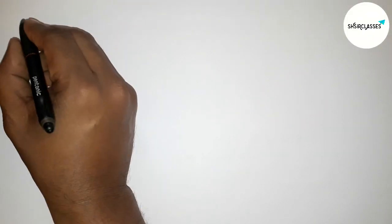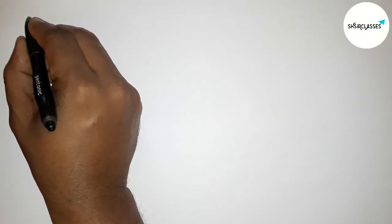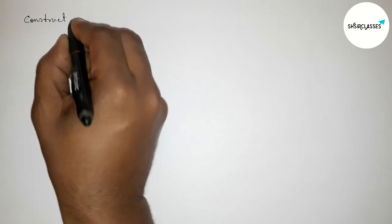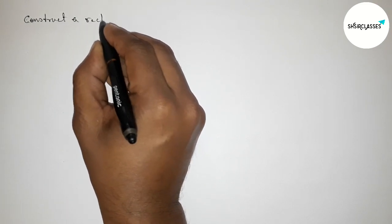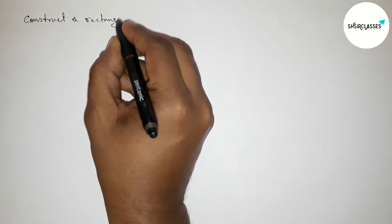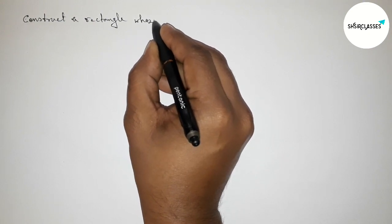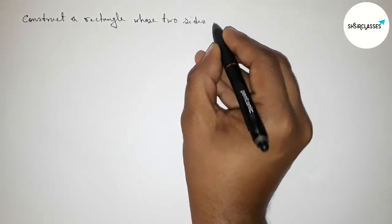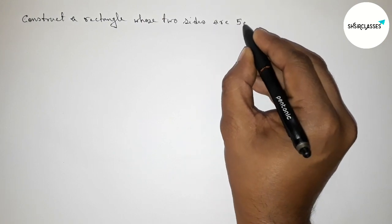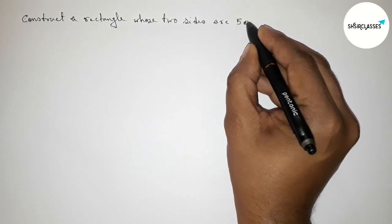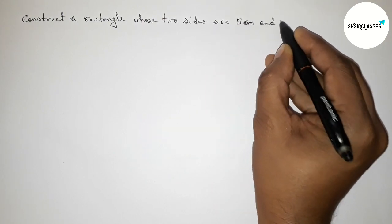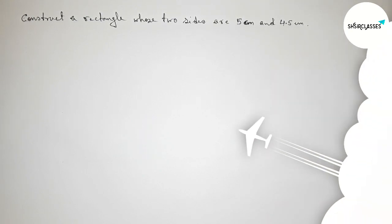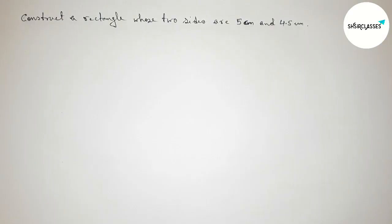Hi everyone, welcome to SI Share Classes. Today in this video we have to construct a rectangle whose two sides are 5 centimeter and 4.5 centimeter. Please watch the video till the end. Let's start.